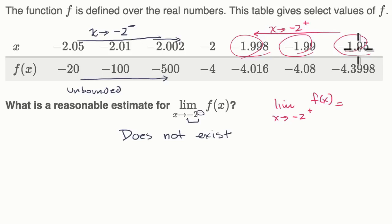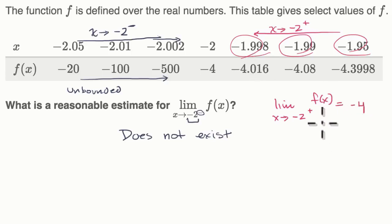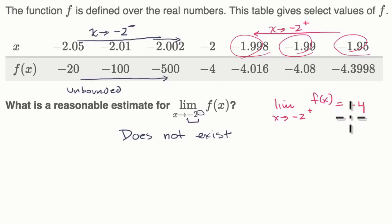As we're getting closer and closer to negative 2 from values larger than negative 2, it looks like f of x is getting closer and closer to negative 4, which is f of negative 2. But that actually seems like a reasonable estimate. Once again, we don't know absolutely for sure just by sampling some points, but this would be a reasonable estimate.